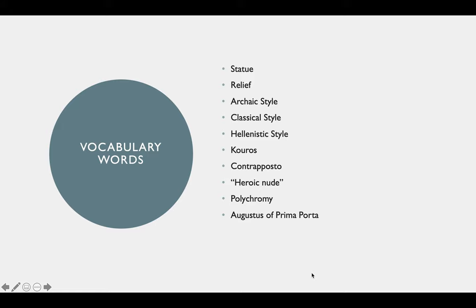The key terms for this subject are statue and relief, which are two different kinds of sculpture. Three artistic styles that are Greek are the archaic style, the classical style, and the Hellenistic style. The term kouros refers to an early archaic statue. Contrapposto is a style of standing that classical sculptures began to use. The term 'heroic nude' refers to the use of nudity to portray heroes and gods. And then the term polychromy refers to the painting of classical statues, which is a discovery that scientists made in the 20th century.